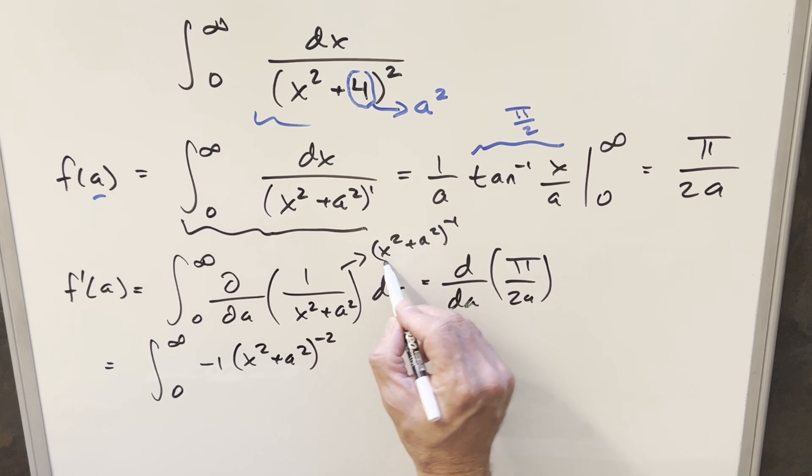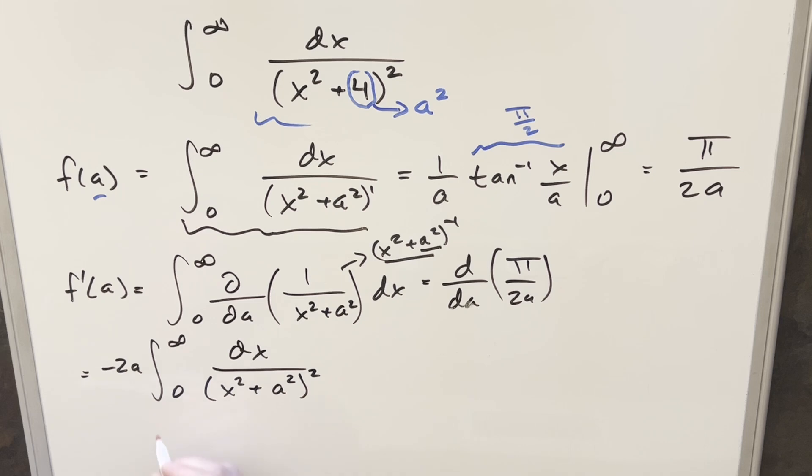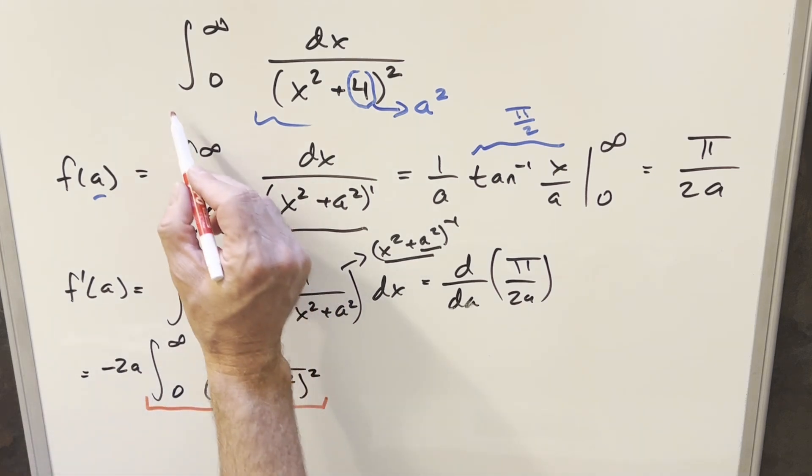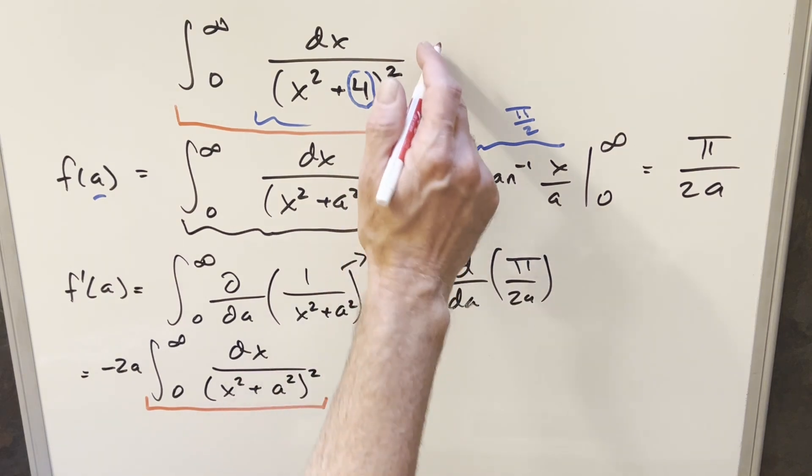And then we're going to need chain rule on this. But the derivative of x squared with respect to a, that's just going to be 0. Derivative of a squared, that's going to bring a 2a out over here. But then this minus 1 times 2a is just a constant that I can bring up front of the integral. And then I can rewrite x squared plus a squared to the minus 2. I can rewrite that in the denominator. And then doing it that way, just notice that what we have right here with just this integral, this is in exactly the same form as our goal. So this is what we're going to use in order to get back to our answer.